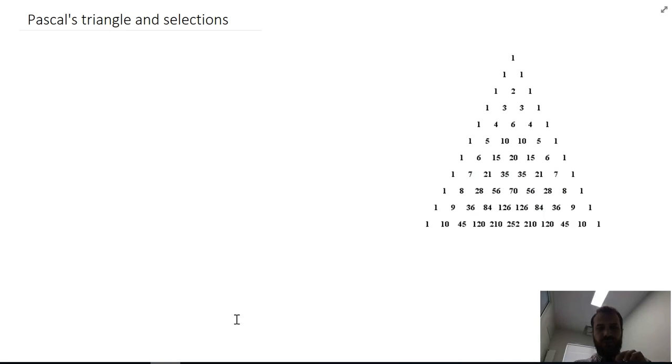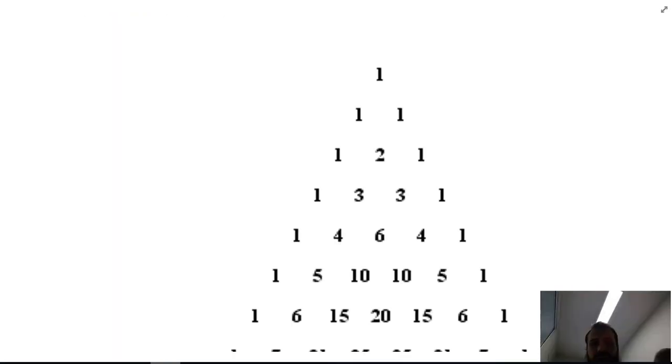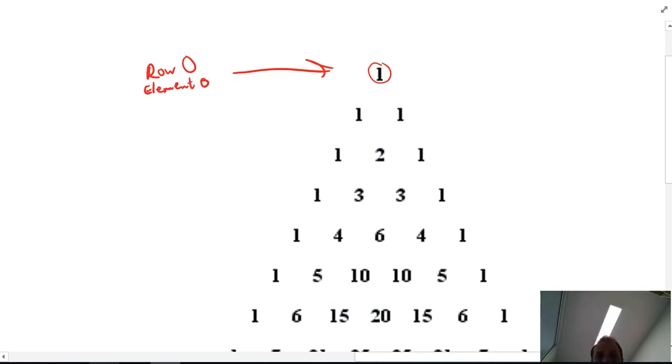So Pascal's triangle is a little bit strange because you actually start counting all the time from zero. What I mean by that is that this element here is actually in row 0 and it's also the first element in row 0 which is element 0. Now that feels pretty straightforward but it's hard to get used to. That makes this row 1 and that makes this element 0 and it makes that element 1.